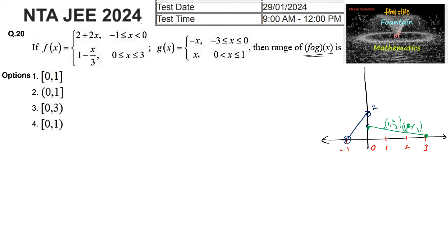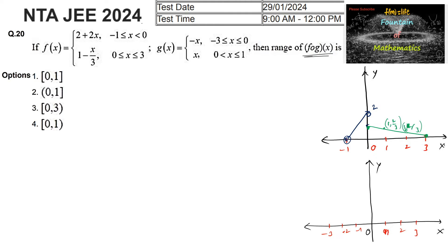Coming to the graph of the function g of x, we can see that from minus 3 to 0, and from 0 to 1. From minus 3 to 0, it is negative x, so we can draw the graph — the point minus 3 comma 3. And from 0 to 1 the graph is positive x, so the point is 1 comma 1.